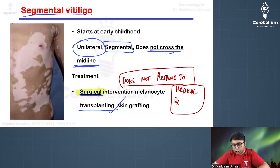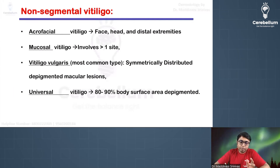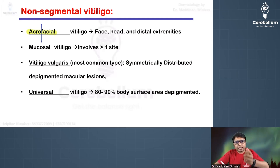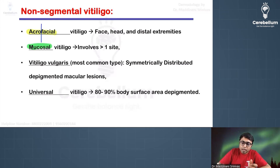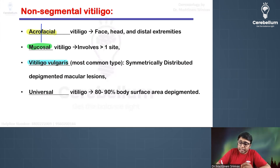The surgical intervention involves a skin transplant — we take skin from the thigh and place it over the vitiligo lesion. In the non-segmental variety, the types can be remembered by their names: acrofacial vitiligo affects the face and acral areas (extremities); mucosal vitiligo affects mucosal surfaces; vitiligo vulgaris is the most common type.